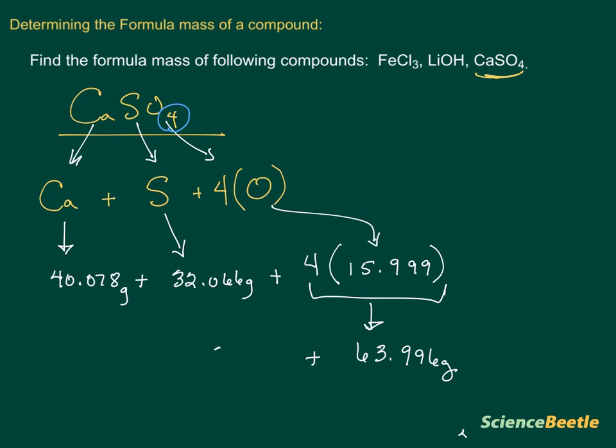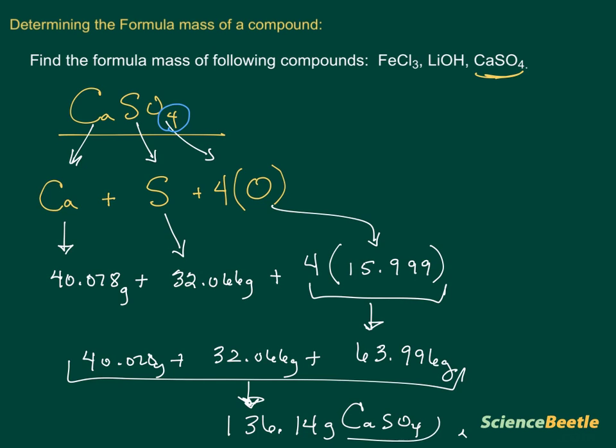And we're still going to add this to the 32.066 grams, and we're going to add that again to the 40.078 grams. If we add all of these together, we wind up with one final formula mass. And that formula mass is going to be 136.14 grams for CaSO4. And so this answer here at the bottom is your formula mass.